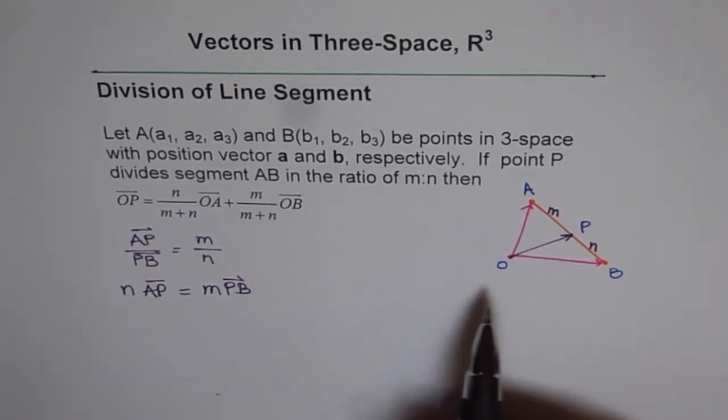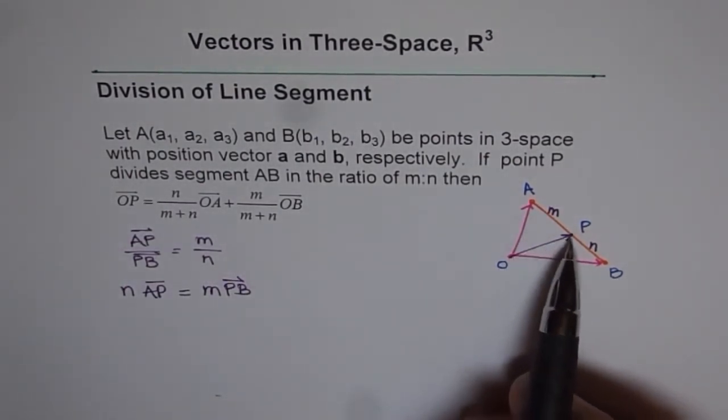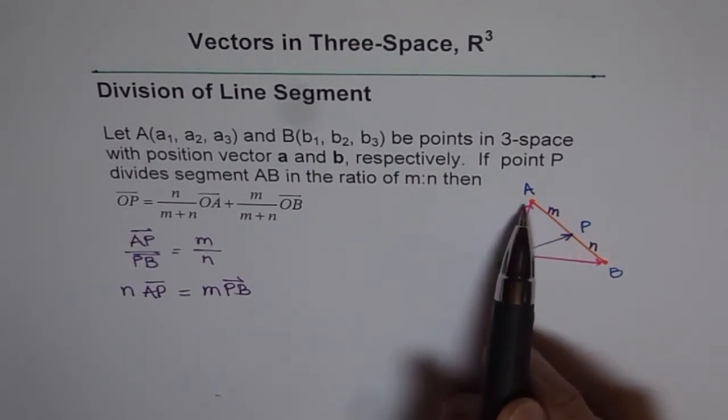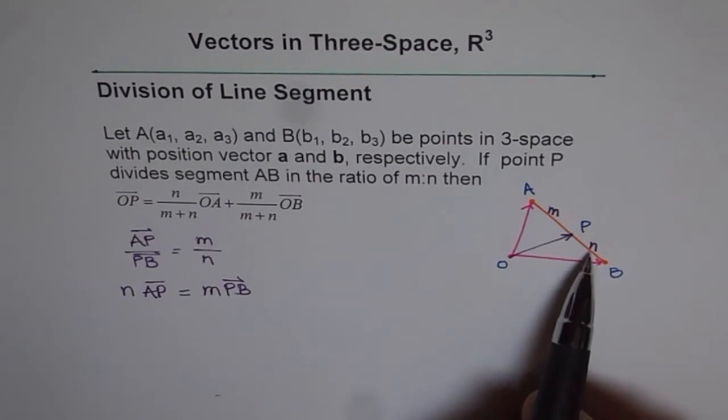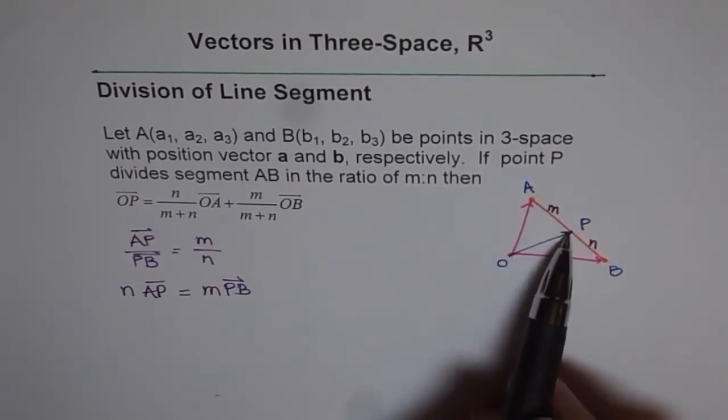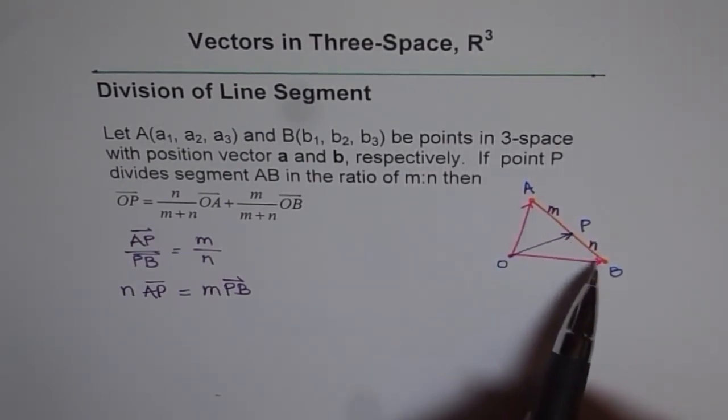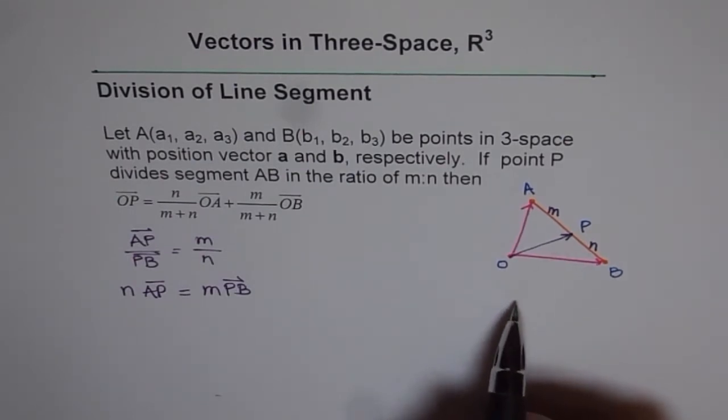So in a way, in general, if there is a point in between which divides the segment in the ratio of M is to N, it means N times AP is equal to M times PB. So that's what it means.